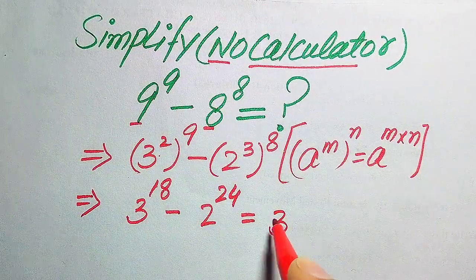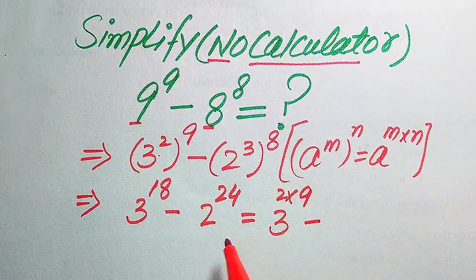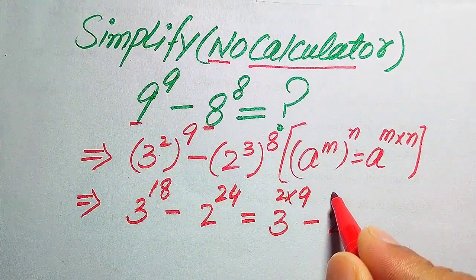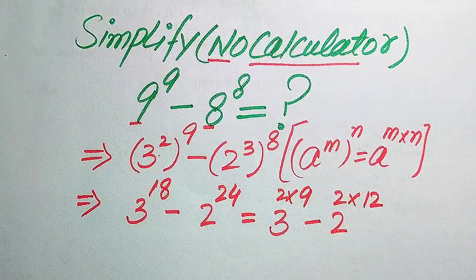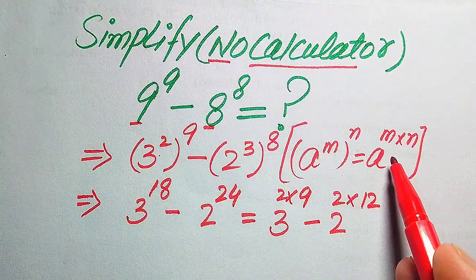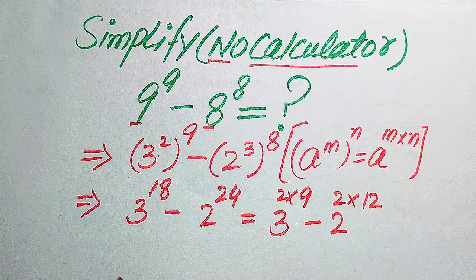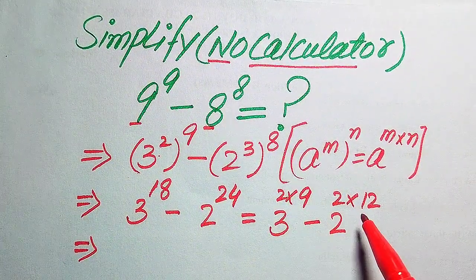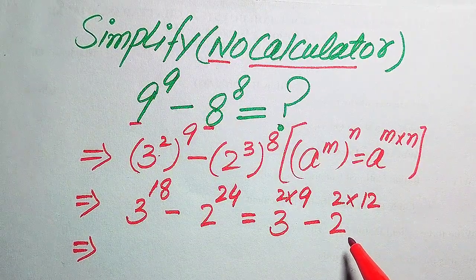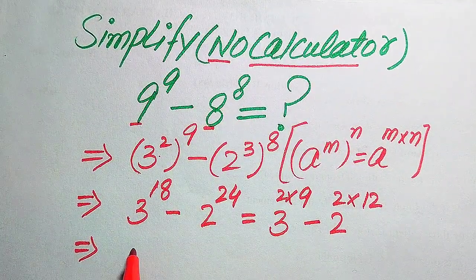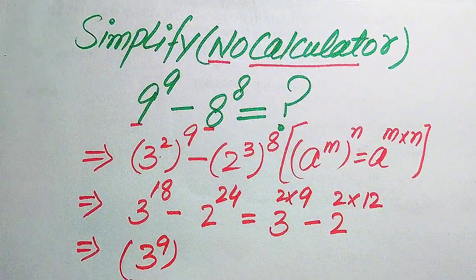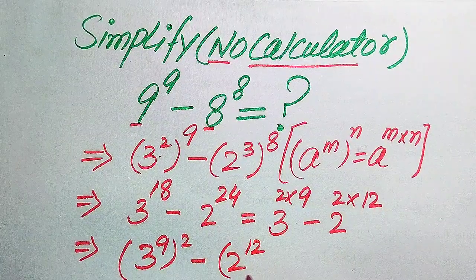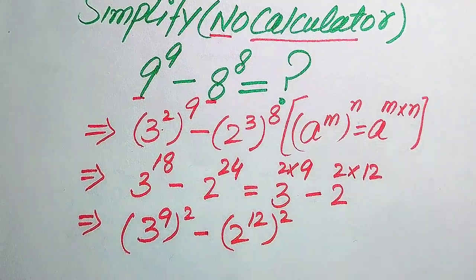We rewrite 3 to the power of 18 as 3 to the power of 2 multiplied by 9, and 2 to the power of 24 as 2 to the power of 2 multiplied by 12. Then, using the exponent law from right to left, we rewrite these as 3 to the power of 9, whole squared, minus 2 to the power of 12, whole squared.